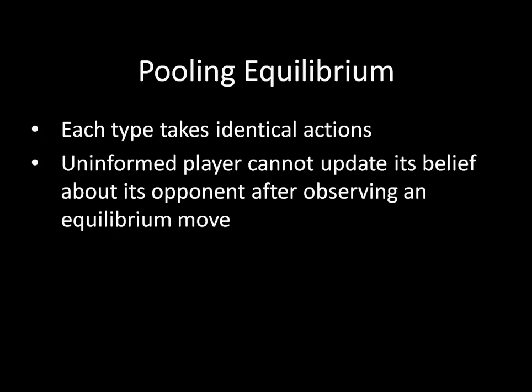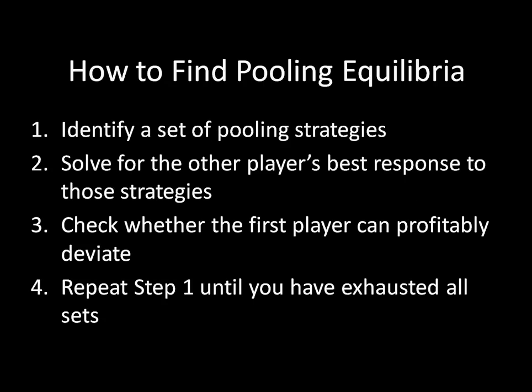Let's go through the algorithm we're going to use to solve for pooling equilibrium. It's the same as what we saw with separating equilibrium last time: we start by identifying a set of pooling strategies, we then solve for the other player's best response to those strategies, we then check whether the first player can profitably deviate, and then we repeat step one until we've exhausted all possible cases.